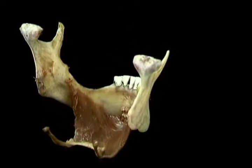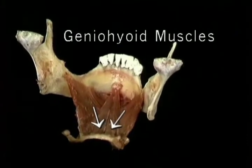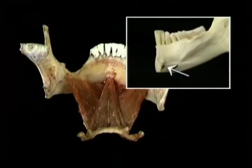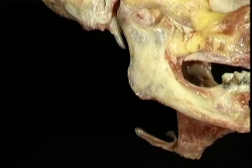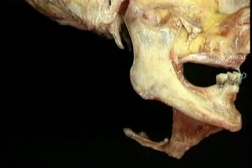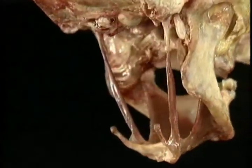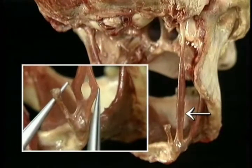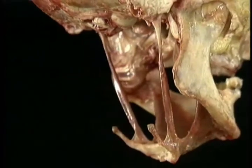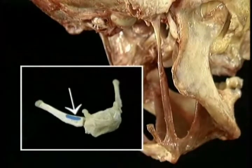The two geniohyoid muscles lie above the mylohyoid. On each side, the geniohyoid arises from the lower part of the mental spine and inserts on the body of the hyoid bone. The stylohyoid is a long, slender muscle that arises from the lateral aspect of the styloid process and is inserted on the base of the greater horn of the hyoid bone. Just above its insertion there's an opening in the stylohyoid, through which the digastric muscle passes.